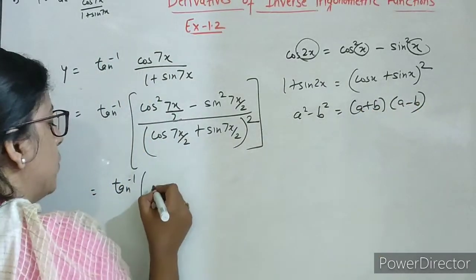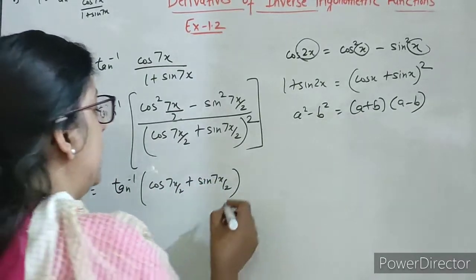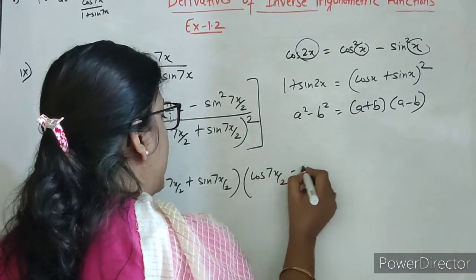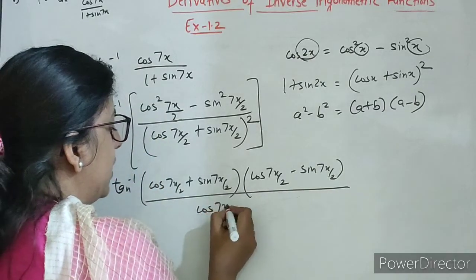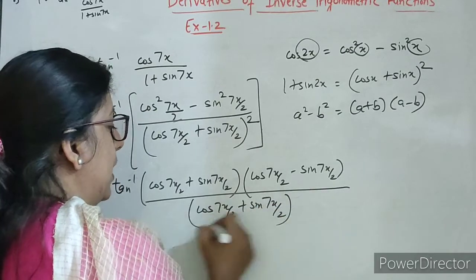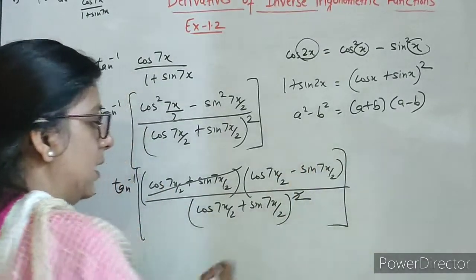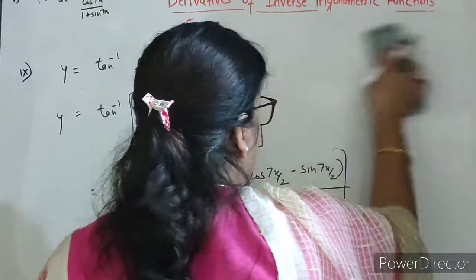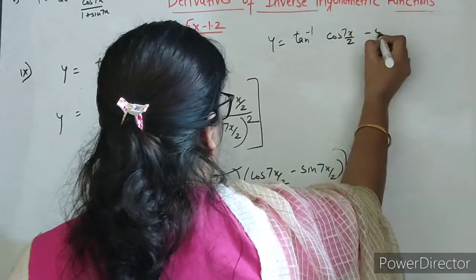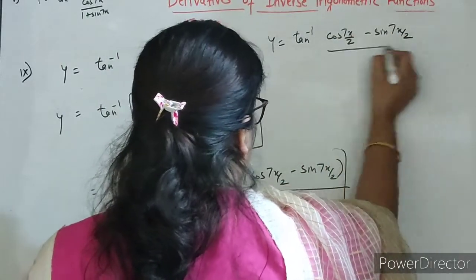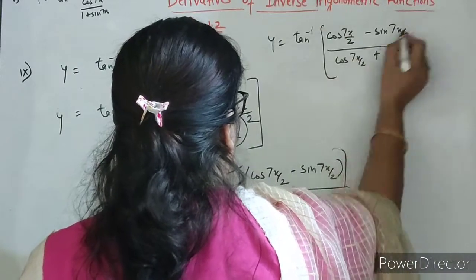So we can write numerator as cos 7x by 2 plus sin 7x by 2 times cos 7x by 2 minus sin 7x by 2. Denominator mein cos 7x by 2 plus sin 7x by 2 whole bracket square — write as it is, jaisa hai waisa hi put kar dengi. So yeh cancel ho gaya. Now what is left? This we can write as tan inverse of numerator cos 7x by 2 minus sin 7x by 2 over denominator cos 7x by 2 plus sin 7x by 2.